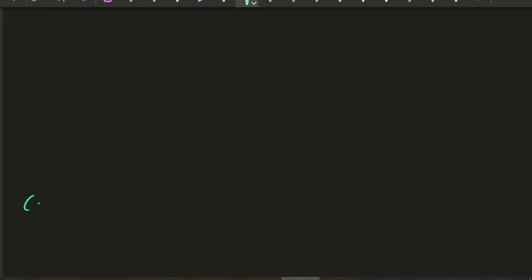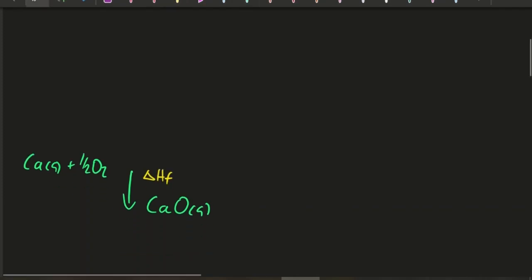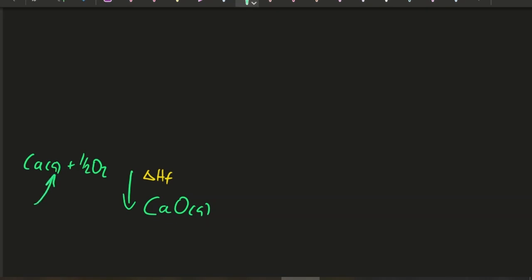So I'm going to start with: solid calcium and oxygen makes calcium oxide. That is actually what we're looking for — the heat of formation of calcium oxide. Heat of formation is making one mole of a substance from the elements in their standard state. Calcium oxide is ionic with strong bonds, so it's a solid. Calcium is a metal and all metals are solid except mercury. Oxygen is a gas and it's diatomic.